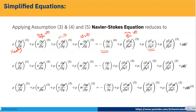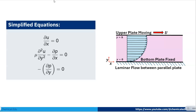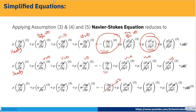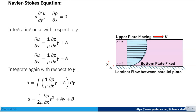Applying the assumptions to the y-momentum equation: since v = 0 everywhere and there is no flow in the z-direction, everything reduces to zero, giving −∂p/∂y = 0. From the x-momentum equation, with steady flow, ∂u/∂x = 0, no z-flow, and no gravity, we get: −∂p/∂x + μ·∂²u/∂y² = 0.